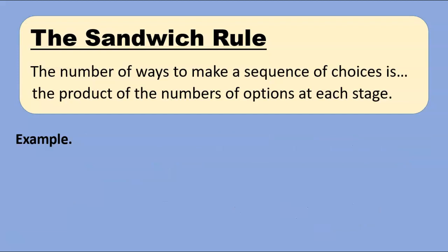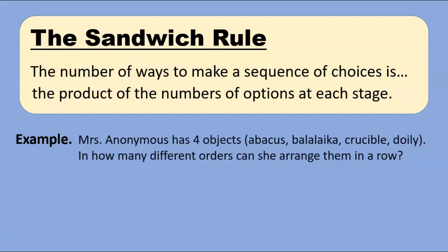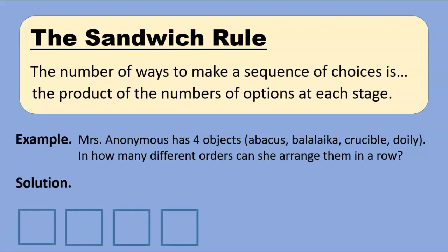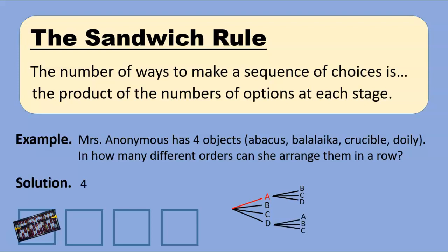For our next example, we'll turn to Mrs. Anonymous, who has four objects: an abacus, a balalaika, a crucible, and a doily. In how many different orders can she arrange these four objects in a row? We'll call on the sandwich rule. The trick is to think of four empty positions into which the objects will be placed, then break the problem into a sequence of choices. She has four options for the first slot. For the sake of argument, let's say she puts the abacus there. Now she has three options for the second slot, and that would be true no matter what she had chosen first.